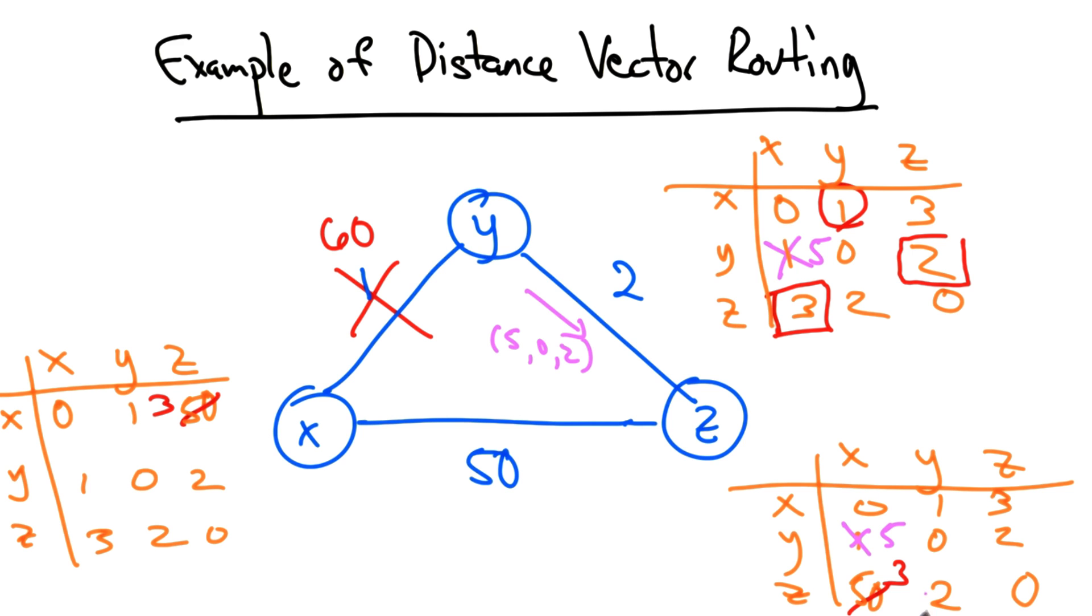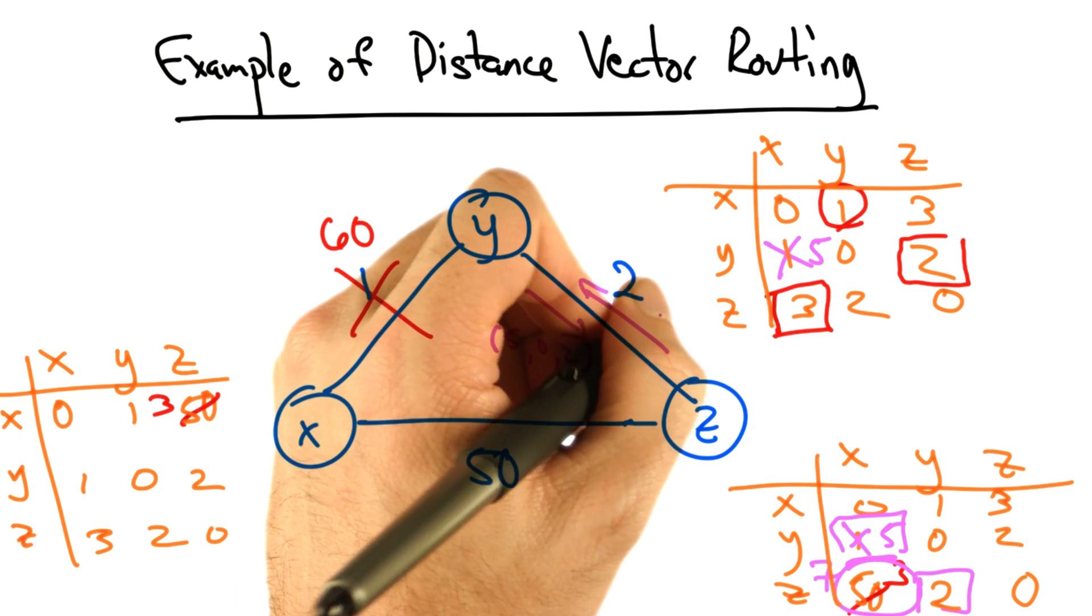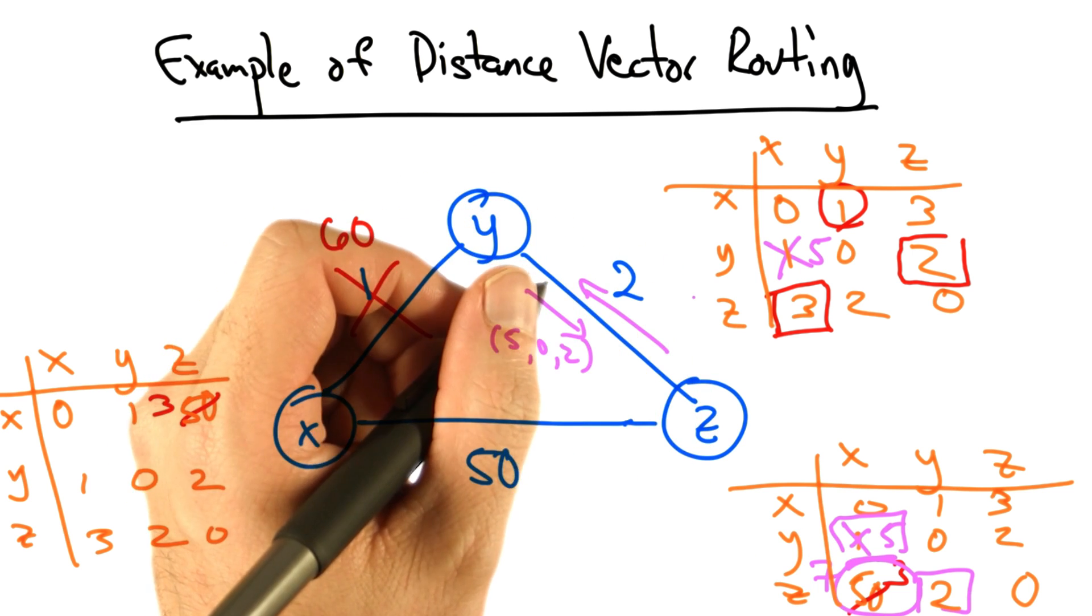At this point, z needs to recompute its shortest path to x. Now it knows that it can get to y with a cost of 2, but it thinks still that y can get to x with a cost of 5. Therefore, this entry is no longer 3, but 7. And now z sends its new distance vector back to y.